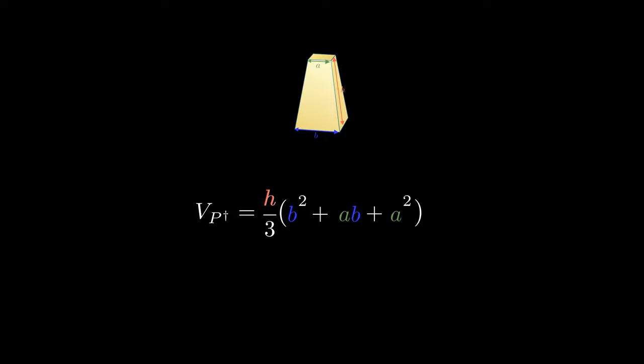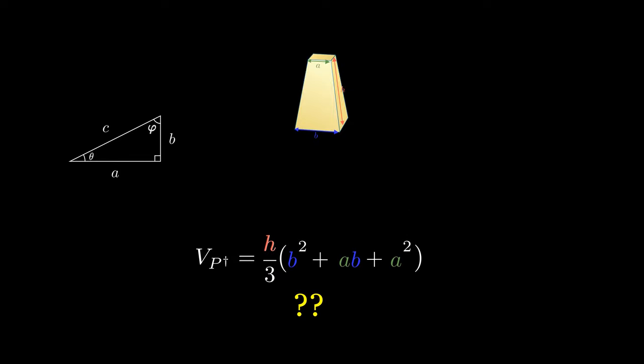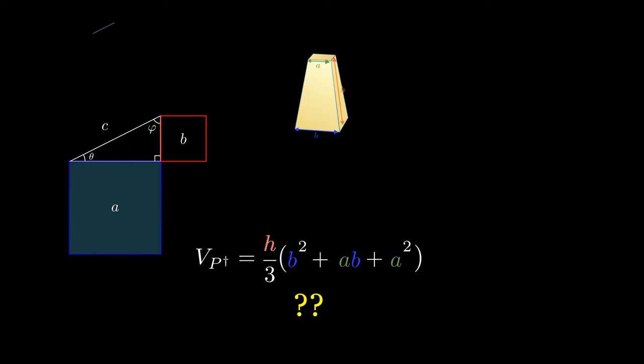But now the question arises, how is it that the ancient Egyptians came upon this equation without the mathematical insights of Pythagoras and his theorems about triangles and geometry?